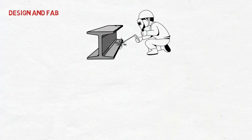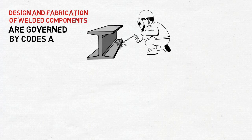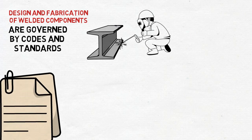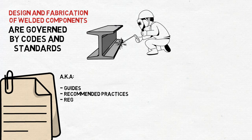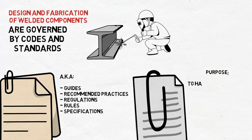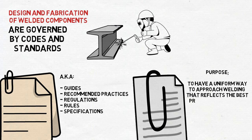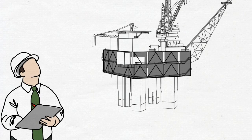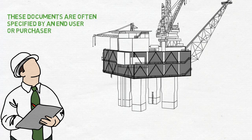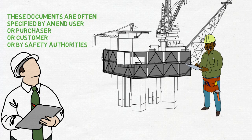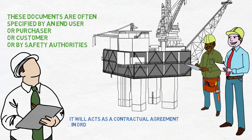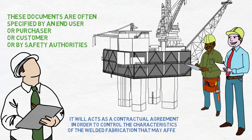Many aspects of the design and fabrication of welded components are governed by documents known as codes and standards. These documents are also known as guides, recommended practices, regulations, rules, and specifications. The purpose of these documents is to have a uniform way to approach welding that reflects the best practices developed and proven to work over time. These documents are often specified by the end user, purchaser, customer, or safety authorities, and serve as a contractual agreement to control the characteristics of the welded fabrication that may affect its service requirements.